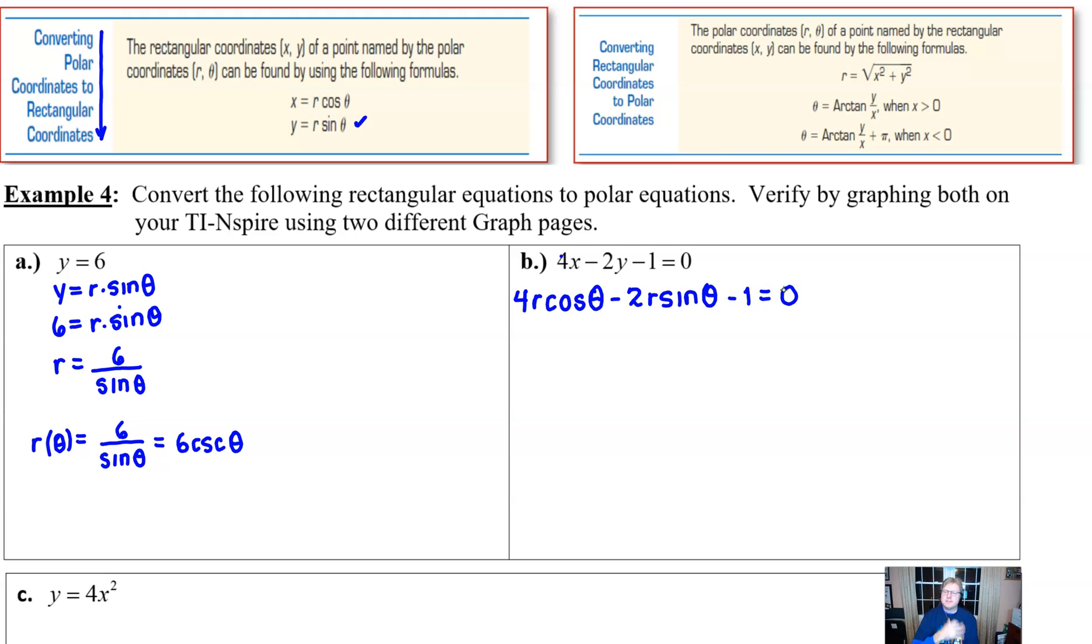y is going to be r times the sine of theta. Now, I know when you look at this, you think, boy, this is a hot mess. But you have to remember what your main goal is. And your main goal is to simply get the r by itself. Now that we've invoked r into this problem, we can get r by itself fairly easily if we just factor an r out of the left side.